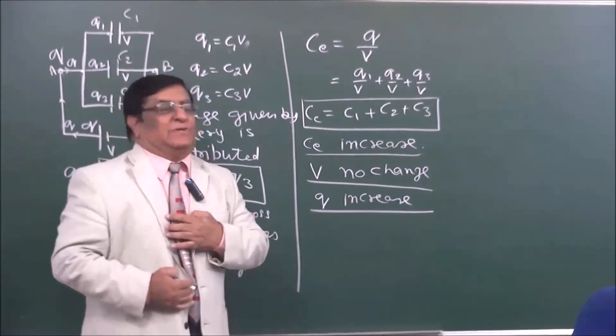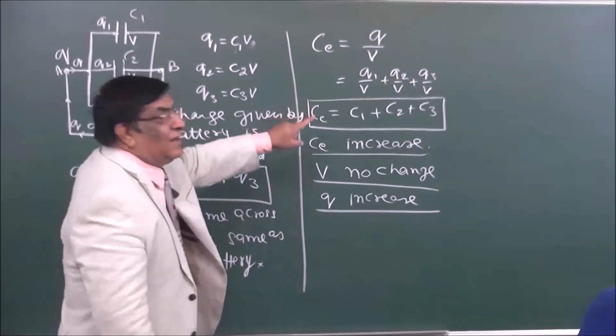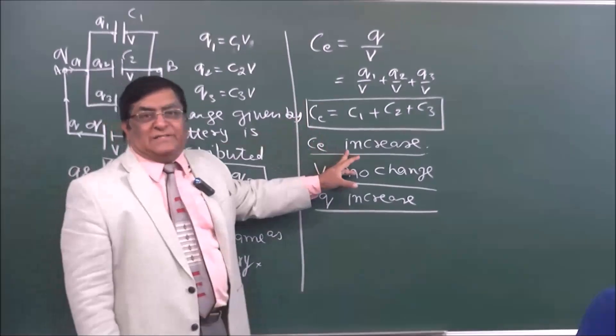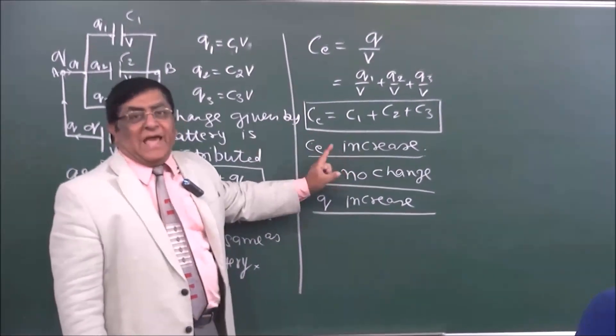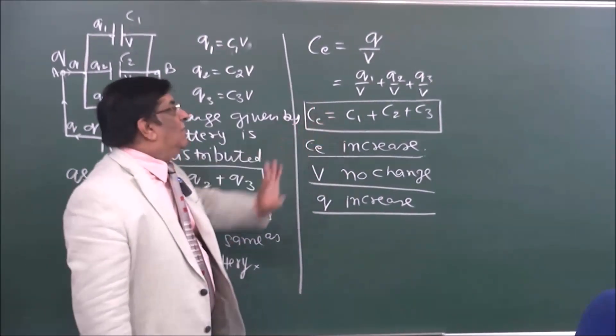Now, if there are N identical capacitors, each of capacitance C, what will be the equivalent capacitance?